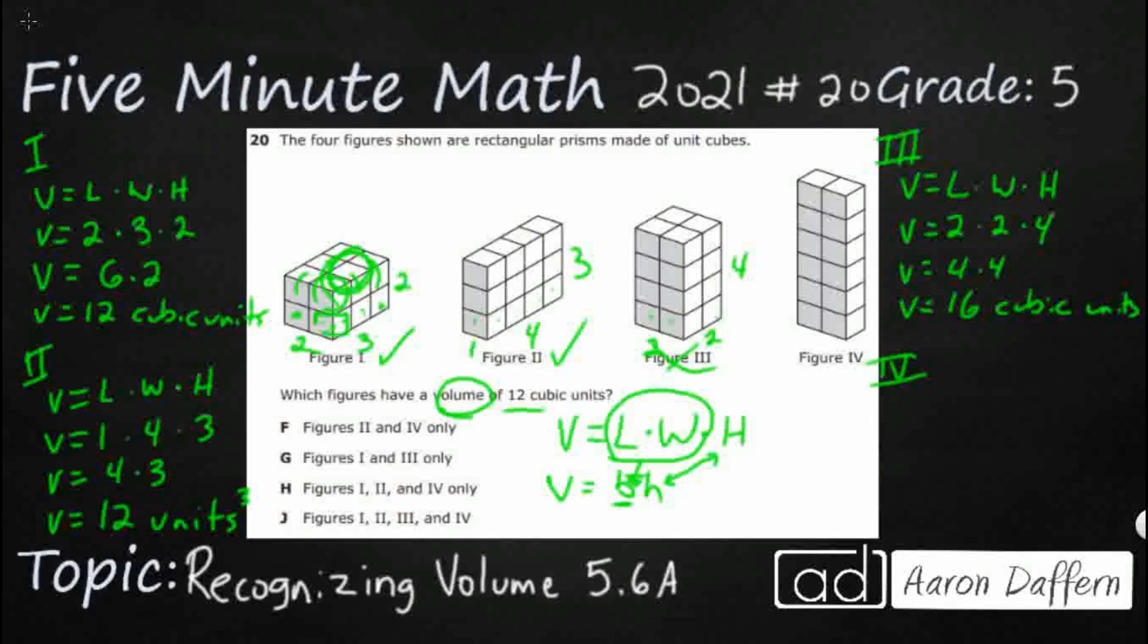Let's finish off figure four. Volume equals length times width times height. So my length is 2. My width is just 1. It's not very wide. It's just one layer across. Height is going to be 1, 2, 3, 4, 5, 6.